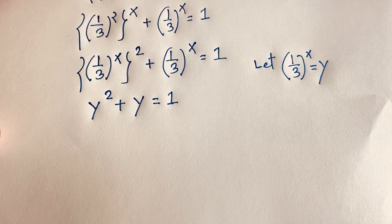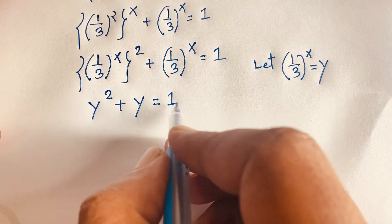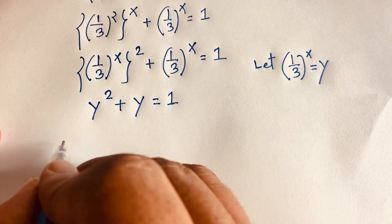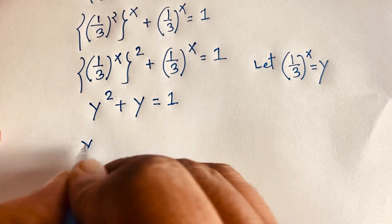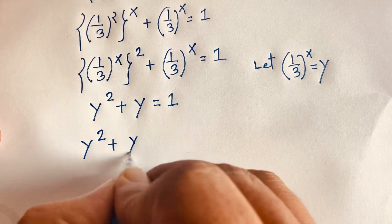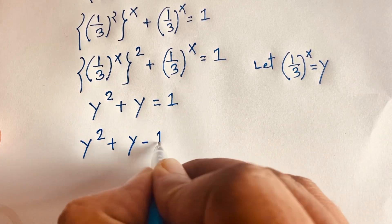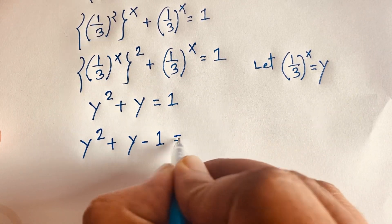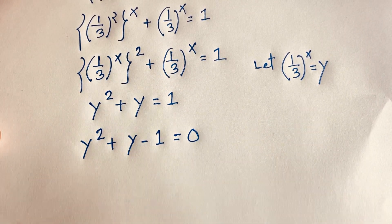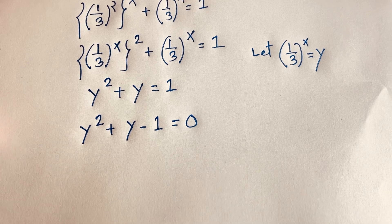If I move the 1 to the left side, it will be y squared plus y minus 1 is equal to 0.